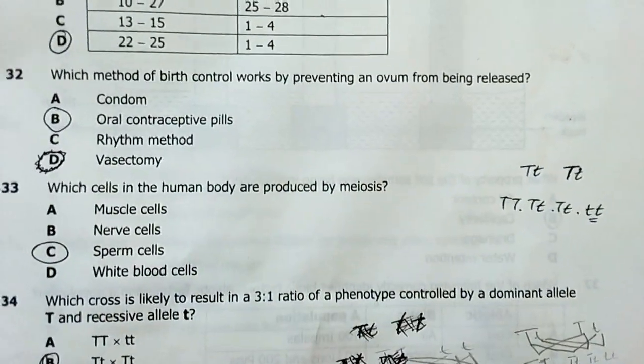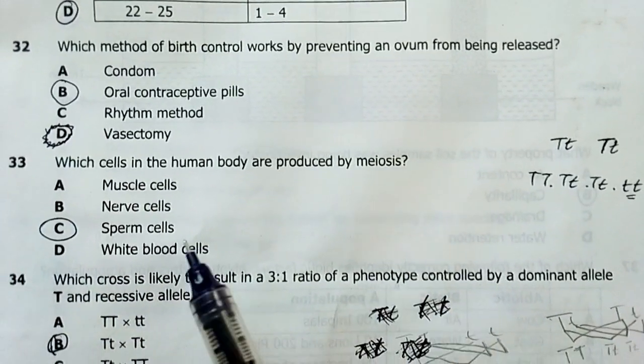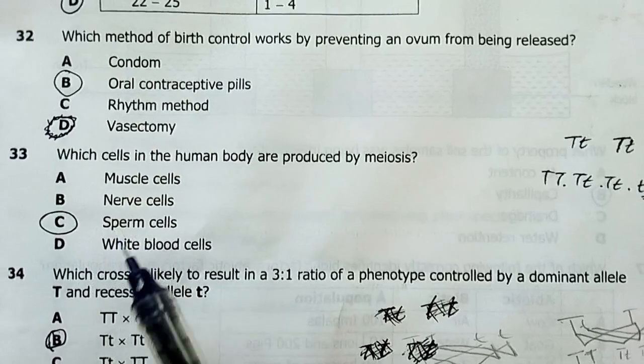Number 33. Which cells in the human body are produced by meiosis? Gametes. But here there's sperm, and the sperm cell is a gamete cell. So, the answer is C.